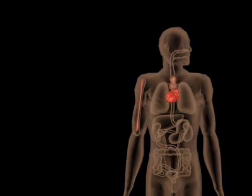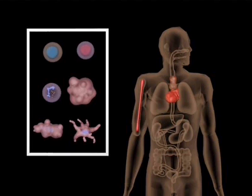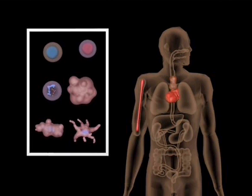The principal cells are lymphocytes, neutrophils, macrophages, and dendritic cells, all of which originate in the bone marrow.